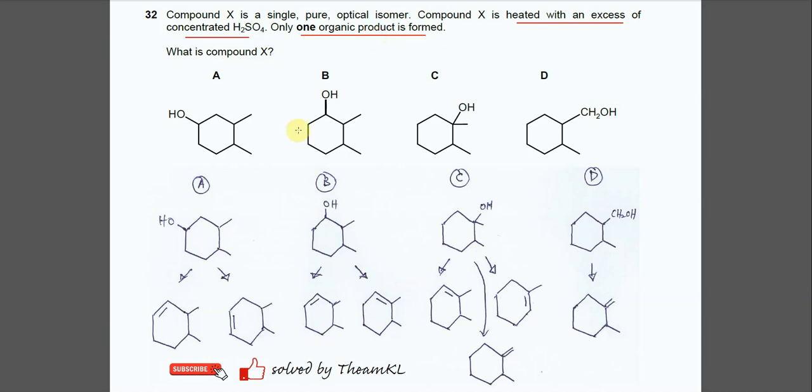So for this A, this OH will remove together with this hydrogen. There are two hydrogens here, so it will remove with one hydrogen here, another hydrogen here. It means it can produce two products.